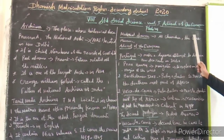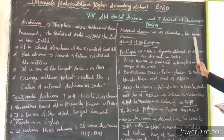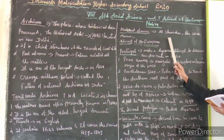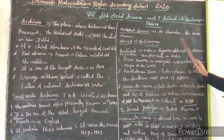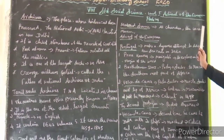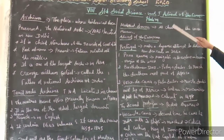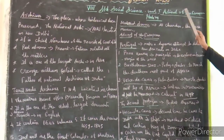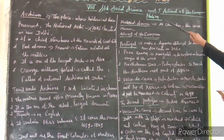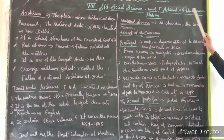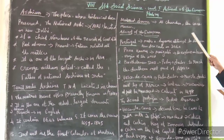Coins also give information about past history. The first paper currency was issued by the Reserve Bank of India in 1938. These coins were bearing the portrait of King George VI. All of these give information about the Advent of the Europeans. Museums also give information about the Advent of the Europeans — collections of things, heritage items stored in museums give information about past events of history.